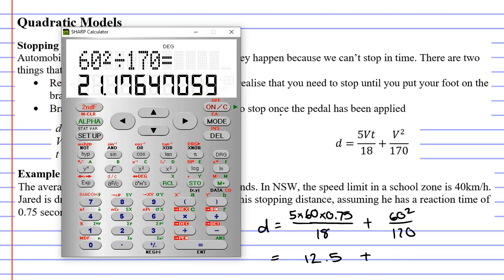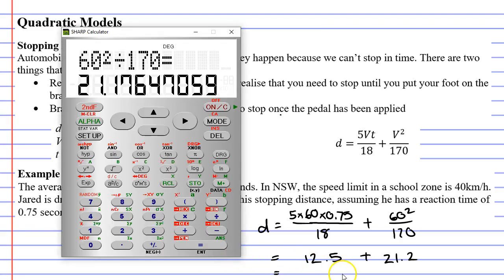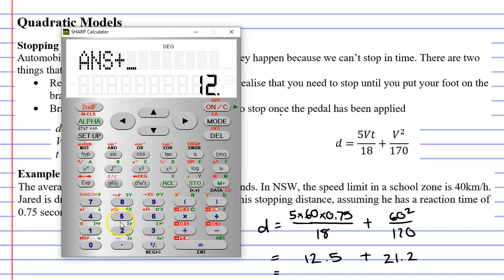I'm bringing up my calculator. The second fraction is 60 squared over 170, or divide 170. And this gives me a bit of a nasty decimal. So for now I'm just going to write it as about 21.2. These are the two numbers I'm going to add up. I always discourage people to round numbers early, which is why I kept this 21.2 in its decimal form. And I'm going to add this number to 12.5.